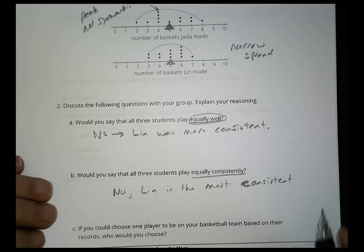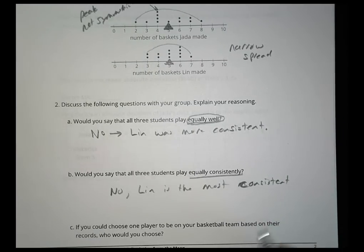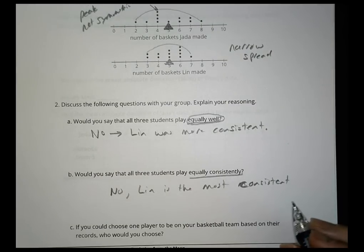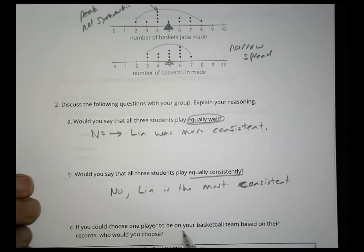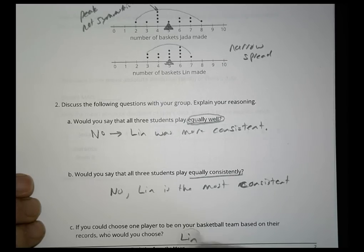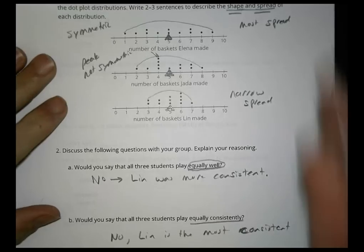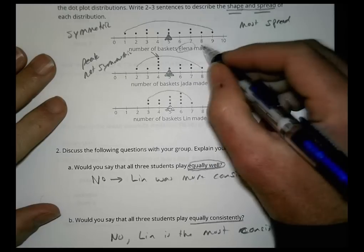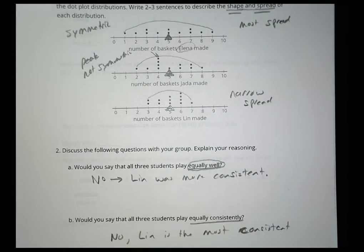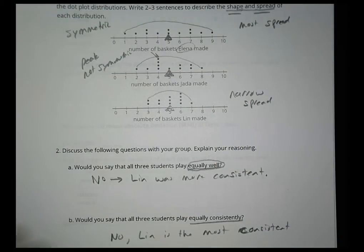In sports, that's often what you're looking for — consistency. If you could choose one player for your basketball team based on their records, I'd go with Lynn because I want the most consistent player most likely to make those points. You might take a risk and choose Elena, knowing you might get that 9, but Lynn is the safer choice.